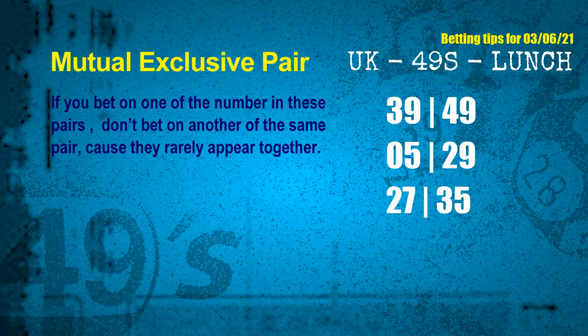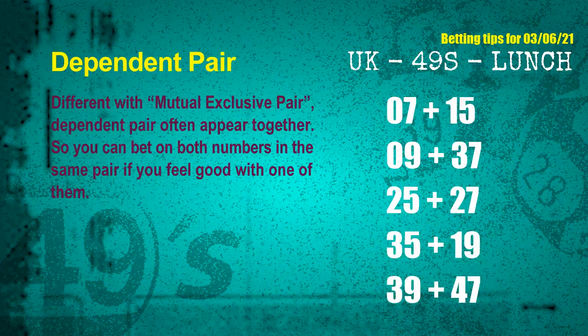Now we have some following ones and ball colors. Here are some tips to increase your hit odds, such as mutual exclusive pairs. These numbers in a pair both match the following ones and colors, but according to thousands of results, they rarely appear together — meaning if you bet on one of them, don't bet on the other in the same pair. The mutual exclusive pairs for the next draw are: first pair — 07 and 15; second pair — 09 and 37; third pair — 25 and 27; fourth pair — 35 and 19; fifth pair — 39 and 47.